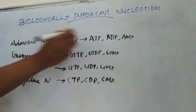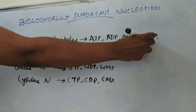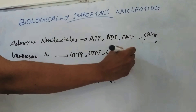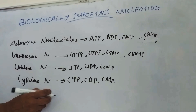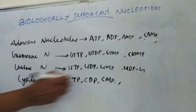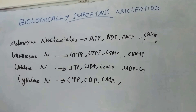In adenosine nucleotides, there is cyclic AMP, and cyclic GMP is found in guanosine nucleotides. Uridine nucleotides include UDP glucose, UDP galactose, etc. Cytidine nucleotides include certain deoxy CDP derivatives of glucose, choline, and ethanolamine.